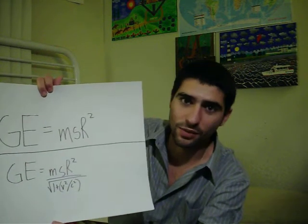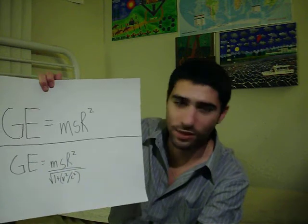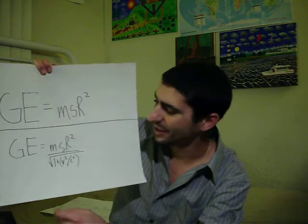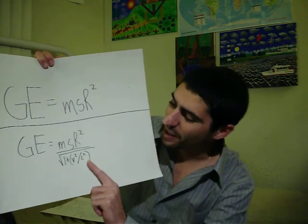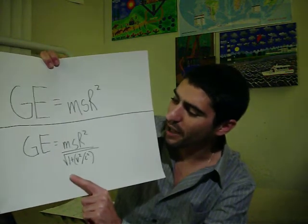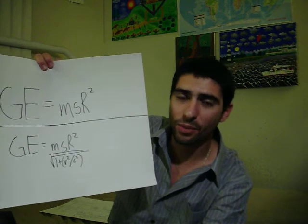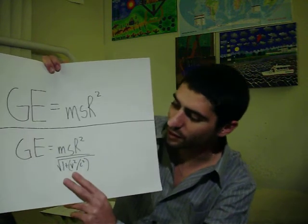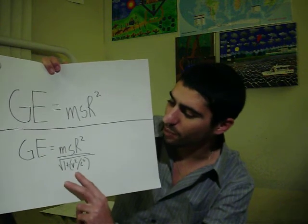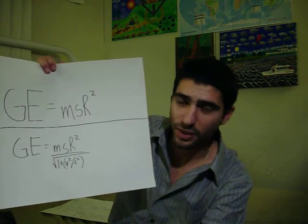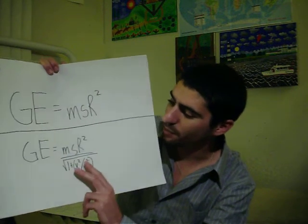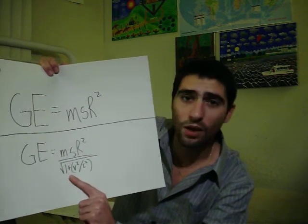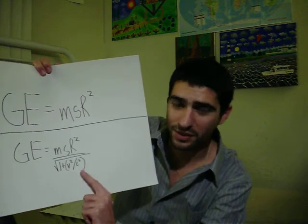That ties back into the water going down the drain and the black holes out in the universe and galaxies. But for the mathematics, black holes can absorb light and operate faster than light within a certain distance. Now mathematically, that gets shown in the bottom portion of the equation, again symmetrical to E equals mc squared. But this time, mass times the speed of rotation squared is divided by the square root of 1 plus v squared divided by c squared.